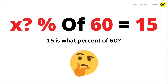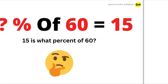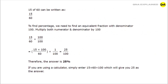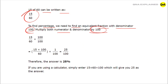15 is what percent of 60? 15 of 60 can be written as 15 upon 60. To find the percentage, we need to find an equivalent fraction with denominator 100. Multiply both numerator and denominator by 100.